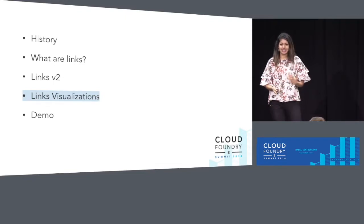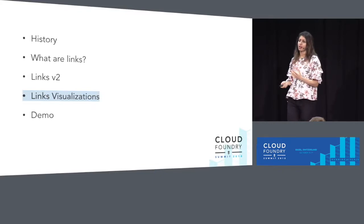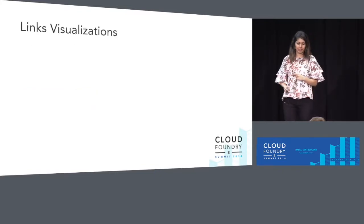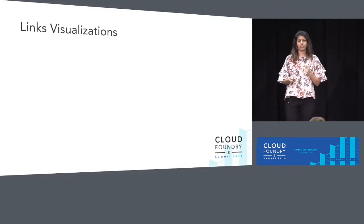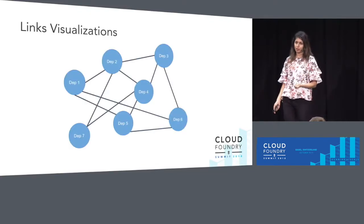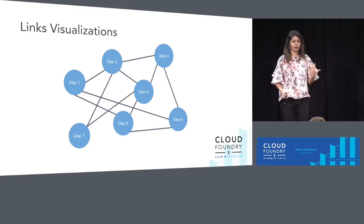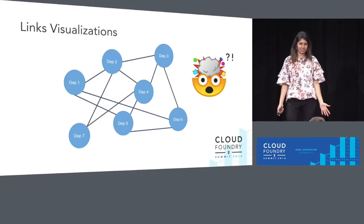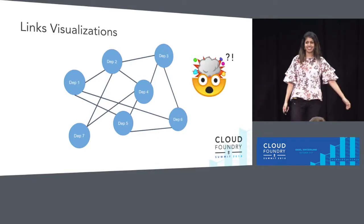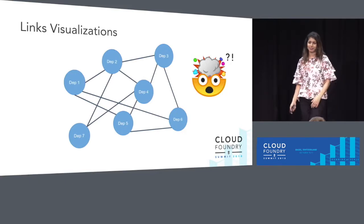Taking a step back — we now understand what links are, why they came to be, and a little bit about the latest features we've developed. But we still have that same problem: a massive deployment with properties, links, and variables flying all over the place. Does it still have to be a headache? I'm going to let Jameel do a demo of the links visualization tool and give you more information.